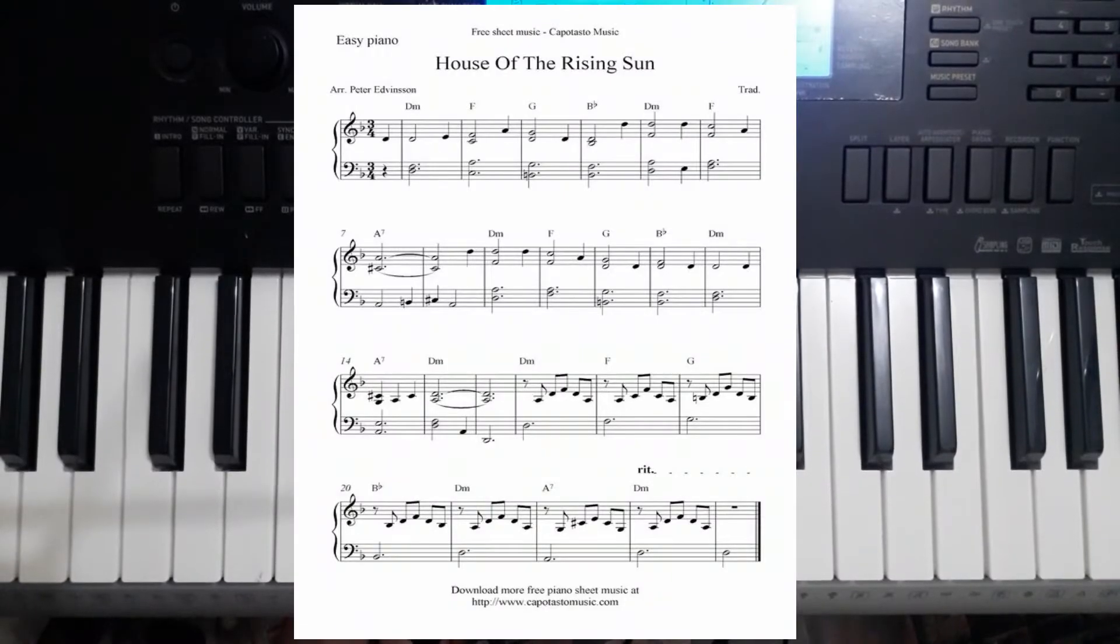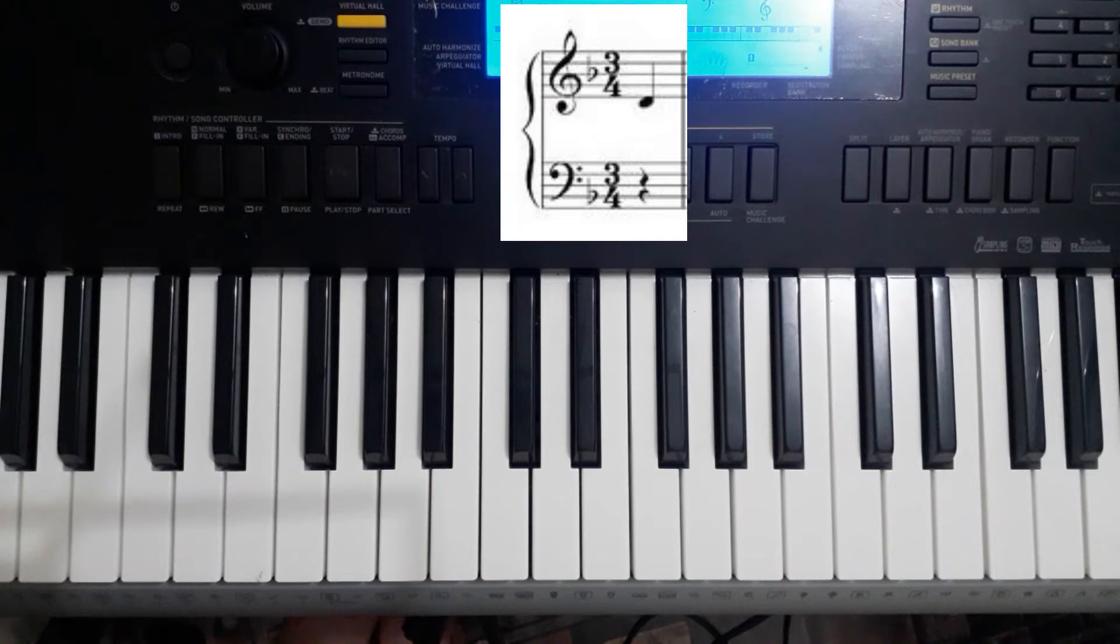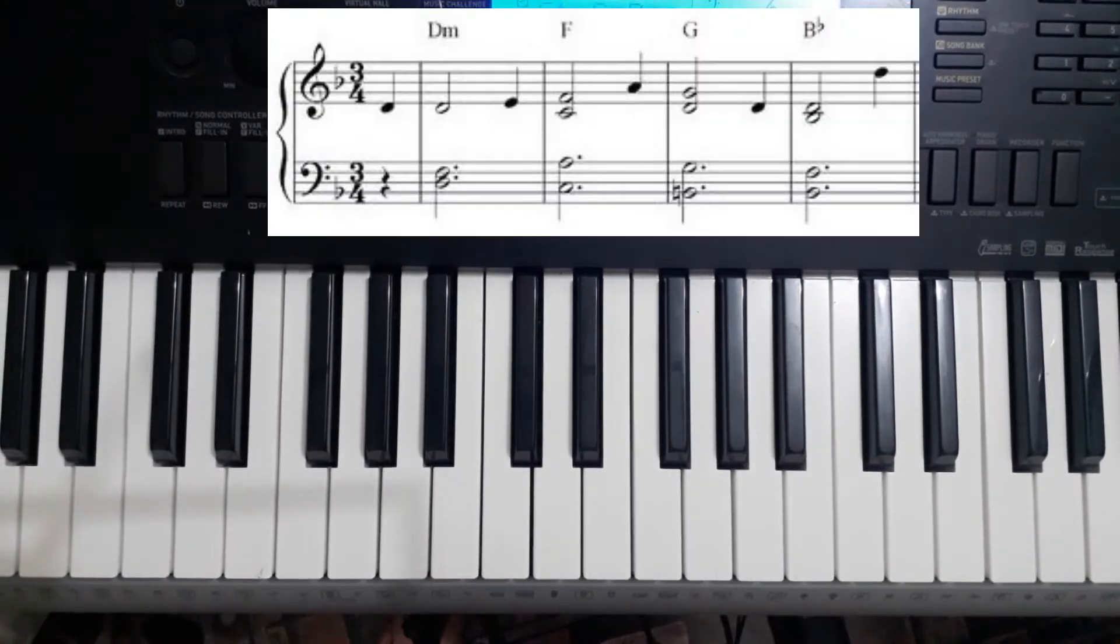So right now, let's go to the piano keyboard. This is the piece of House of the Rising Sun. The first thing you need to detect is the time signature and the key signature. The time signature for this piece is 3/4 and the key signature is F major because there's only one flat which is the B flat.